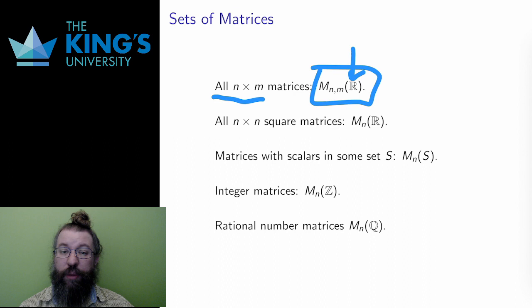If I only want square matrices, then I just use one subscript. This is indicated by n by n square matrices, and again, the number set here is the real numbers.